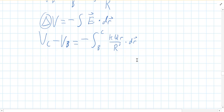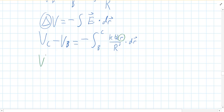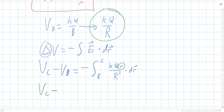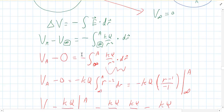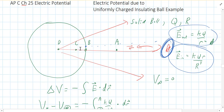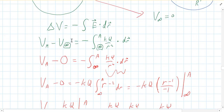We're integrating little r — kq and big R cubed are constants — so it's a linear function. Be careful: little r is the variable (where we're at), and big R is the radius of the ball, a constant. So VC minus kq over big R equals negative kq over big R cubed times the integral of little r dr, evaluated from B to C, which gives r squared over 2.